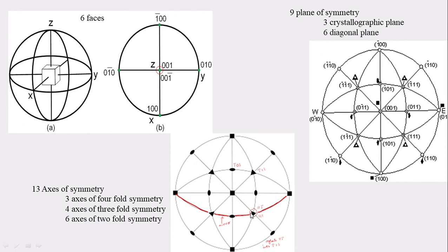And there are six axes of 2-fold symmetry. This is the first one, the second one, the third, fourth, fifth, and sixth. Only half the portion is visible and the second half is in the bottom hemisphere. These are the six axes of 2-fold symmetry.